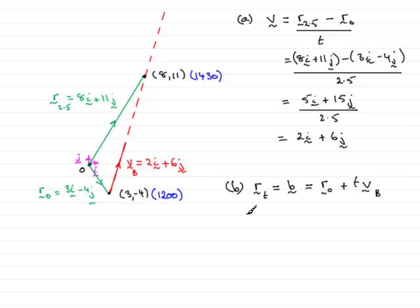Anyway, filling this in now, we therefore have that the vector B is equal to the initial position vector, which is 3i minus 4j, plus T lots of the velocity vector, which is 2i plus 6j.